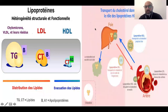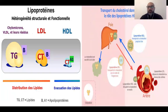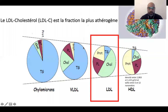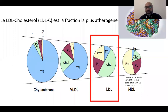Classiquement, la lipoprotéine la plus athérogène est le LDL, car c'est elle qui emmène le cholestérol du foie vers la périphérie. Avec sa densité, il va pouvoir rentrer dans les artères du cœur et du cerveau. Ces LDL sont très riches en cholestérol. La relation entre cholestérol et maladies cardiovasculaires est linéaire : plus on a du cholestérol dans le sang, plus on va développer des événements cardiovasculaires — démontré depuis de nombreuses années.